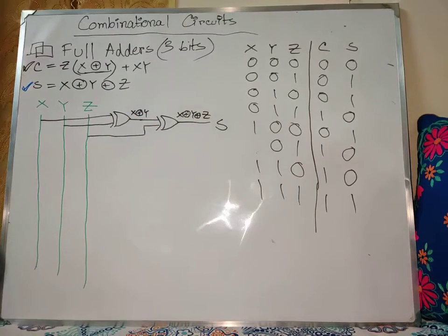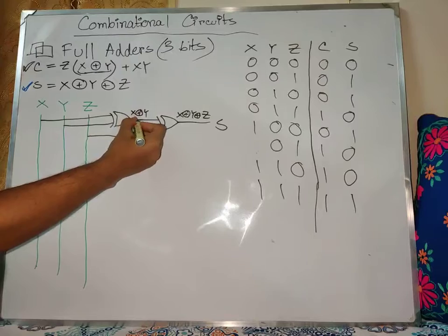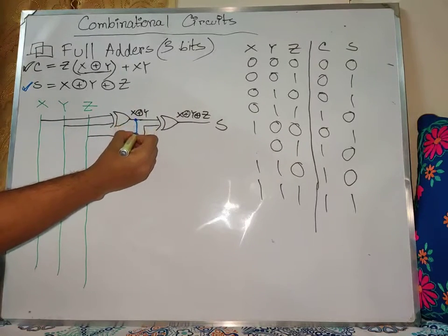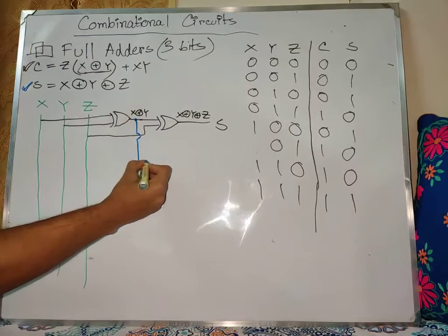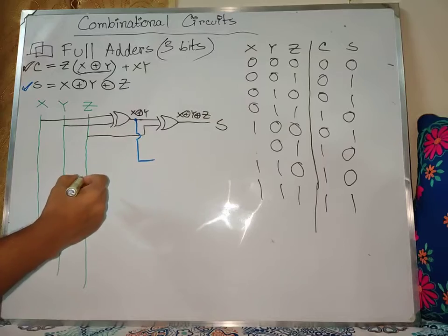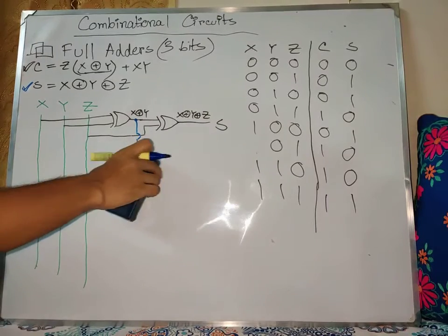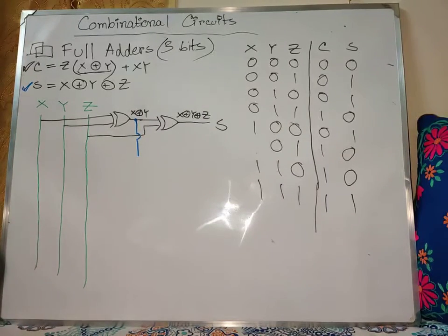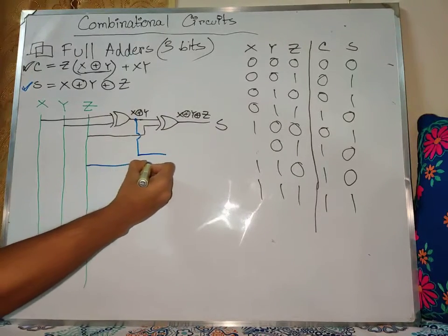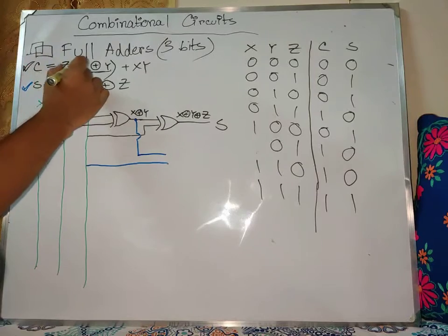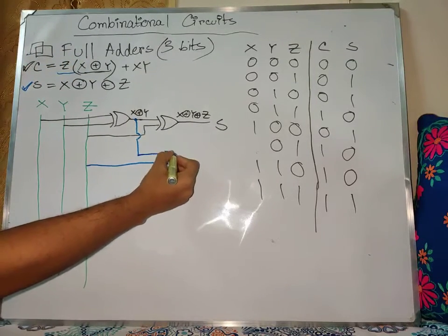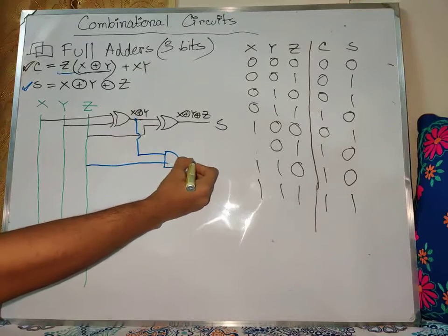So for the CR part, we draw on the equation. We take x XOR y, then connect z AND, and connect. So z is taken and connected with the gate.